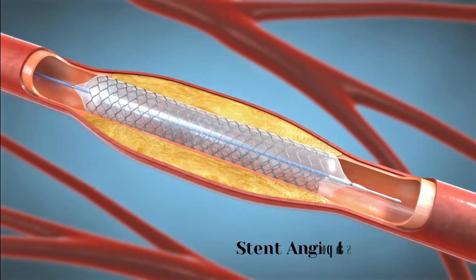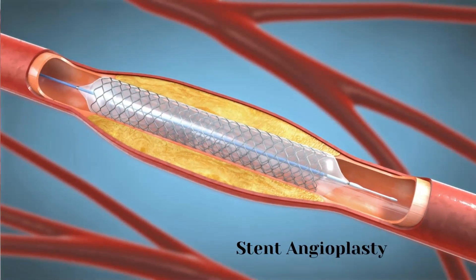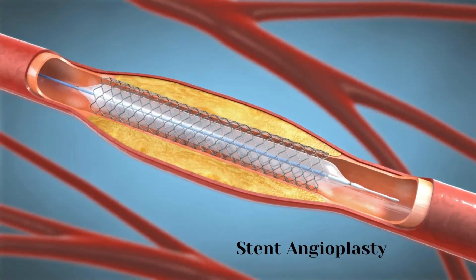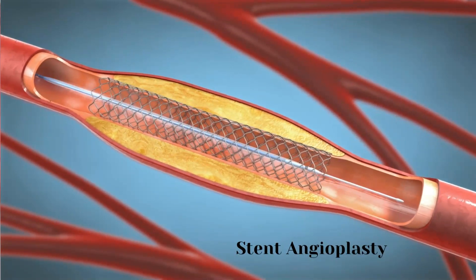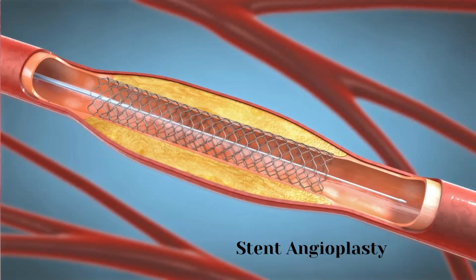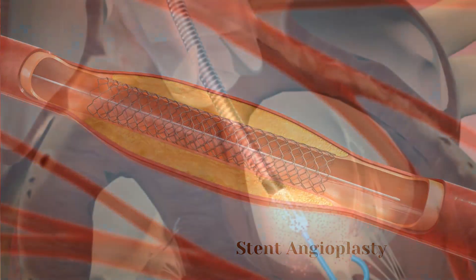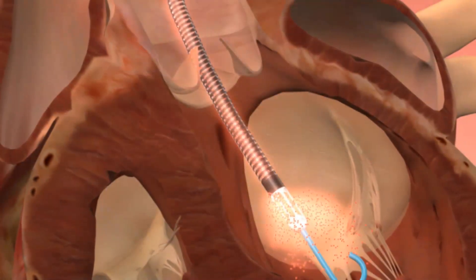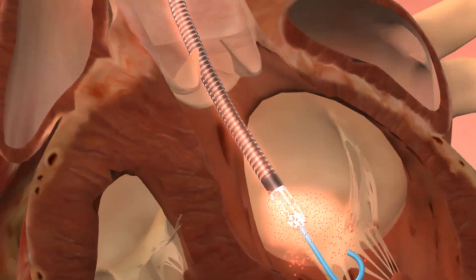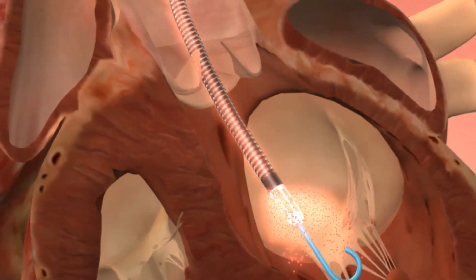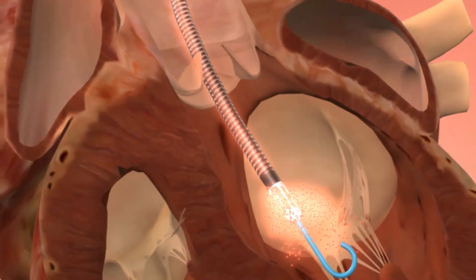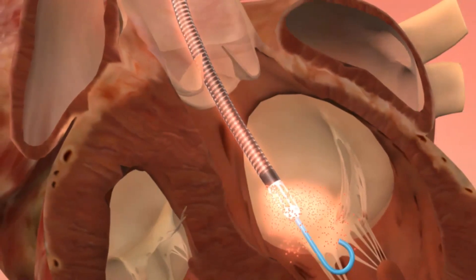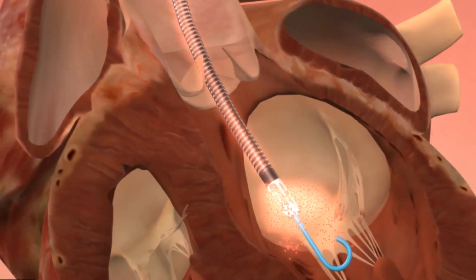Angioplasty with stent: a balloon is used to open the artery and a permanent metal coil is placed to help keep the artery open. Impella supported PCI: a tiny pump is inserted into your heart through your skin to help your heart pump blood.